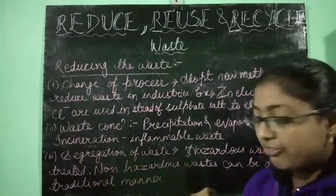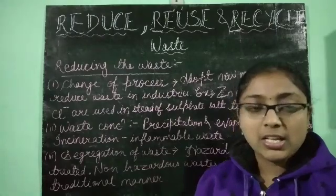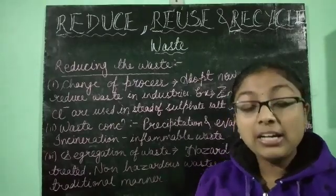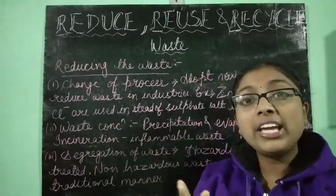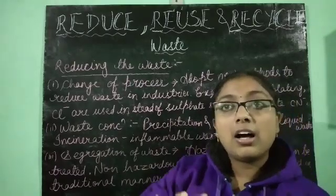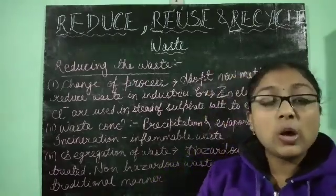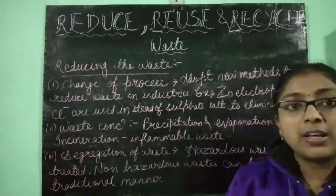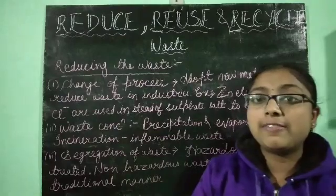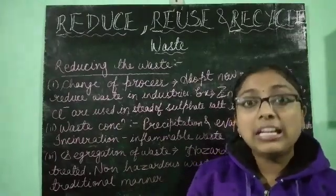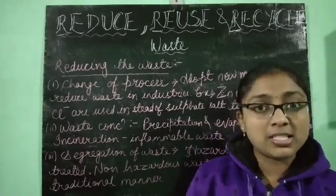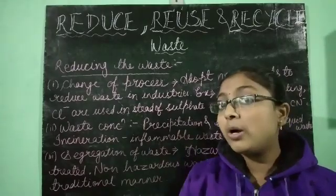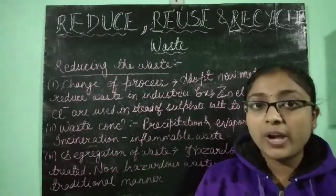The last method is segregation of waste — segregation means to separate. In any industry, various kinds of waste are produced. If we separate them, we can find particular methods for specific types of waste. For example, if we separate biodegradable waste from non-biodegradable waste, then biodegradable waste can be dumped on the earth's surface without causing environmental hazards. But if we dump both together, the non-biodegradable waste will pollute the soil.